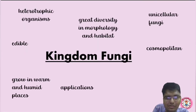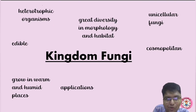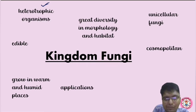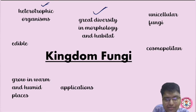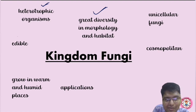Basic information of kingdom Fungi: it contains all the heterotrophic organisms — organisms that depend on other organisms for their food. Autotrophic organisms make their own food with the help of sunlight. There is great diversity in morphology and habitat — vast variety in structure and habitat. Some fungi are edible, meaning they can be eaten. Example: mushrooms.